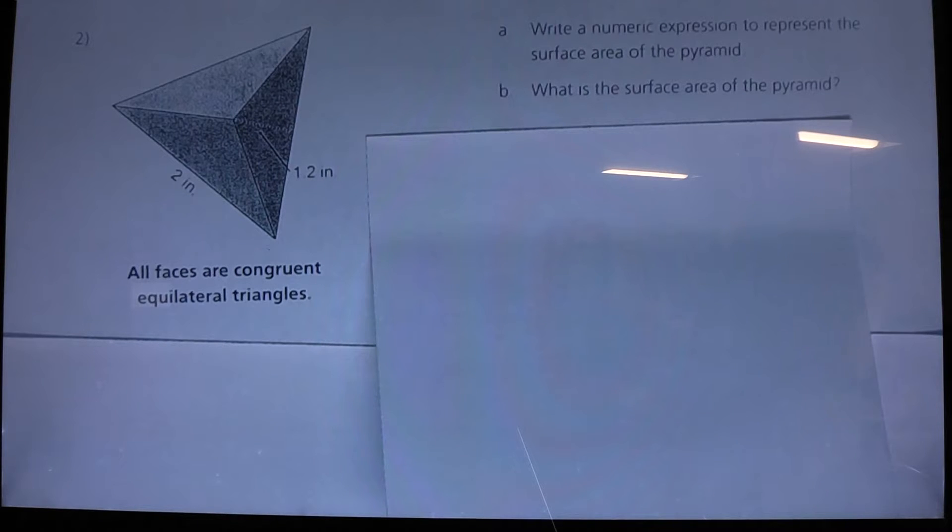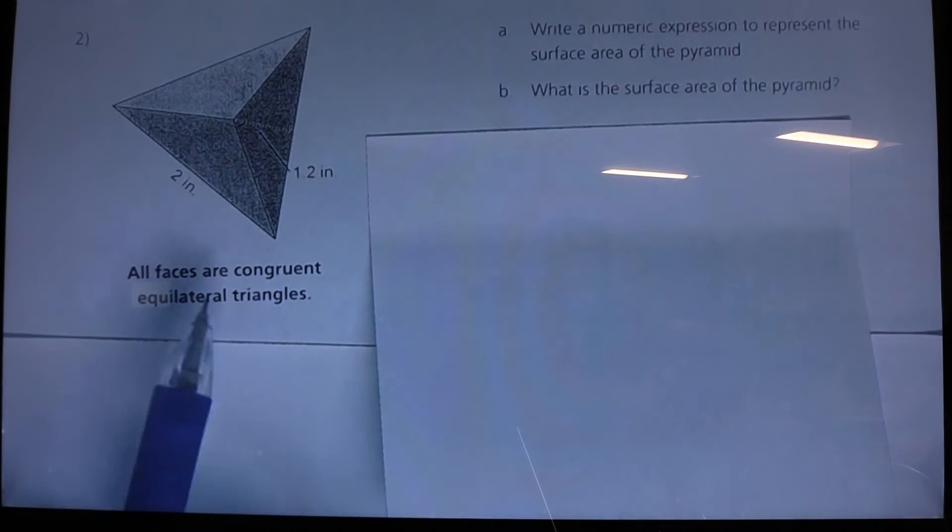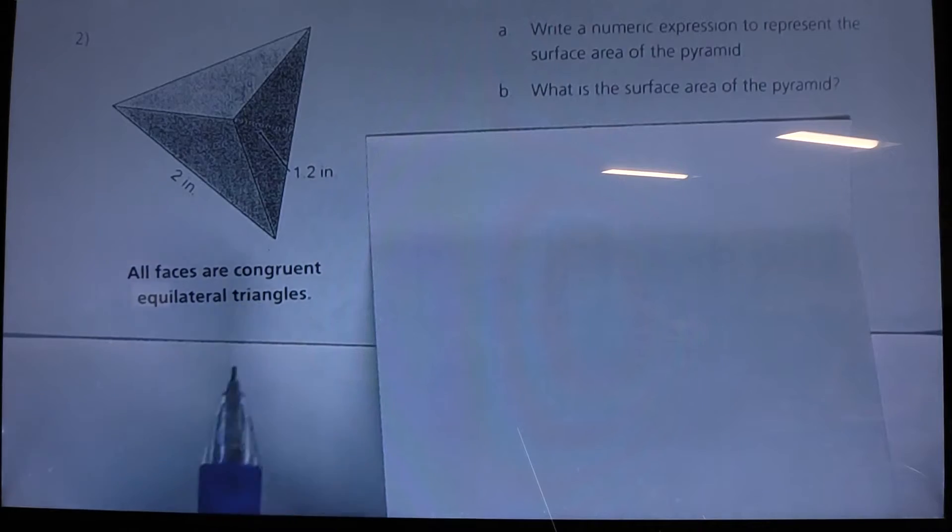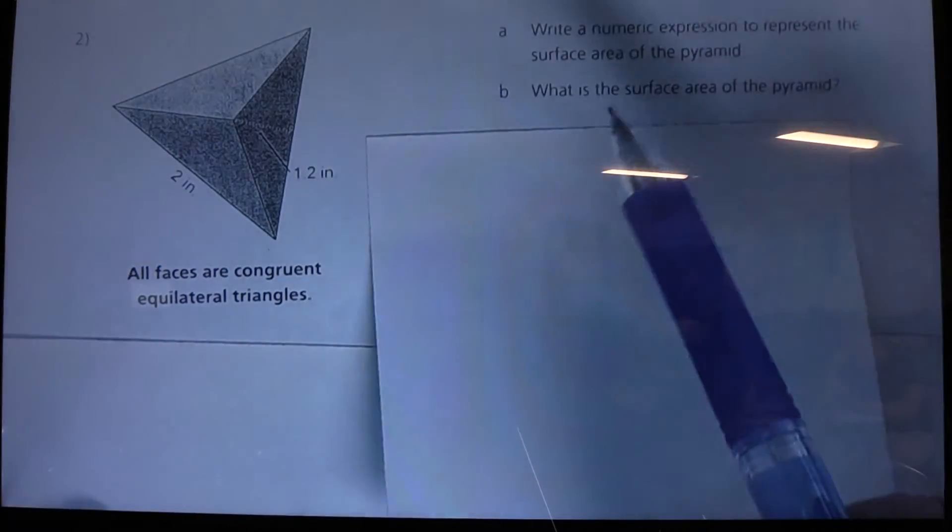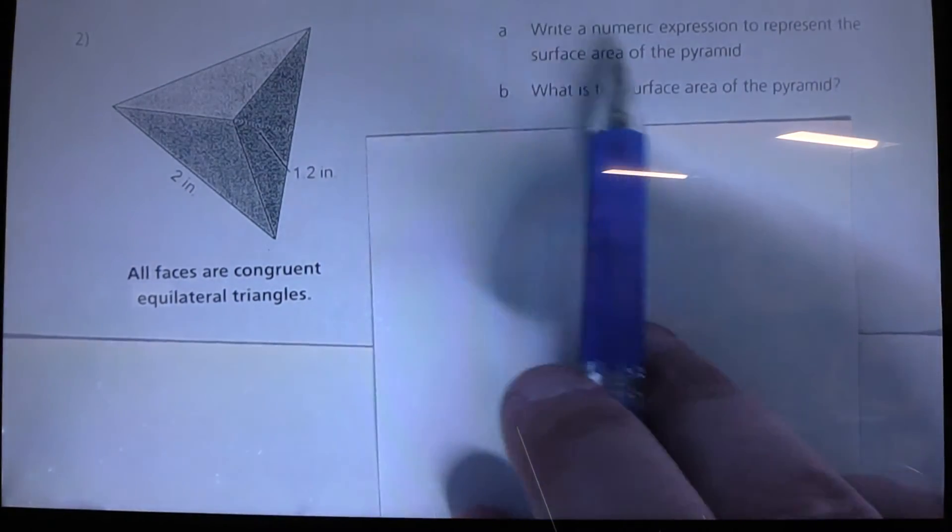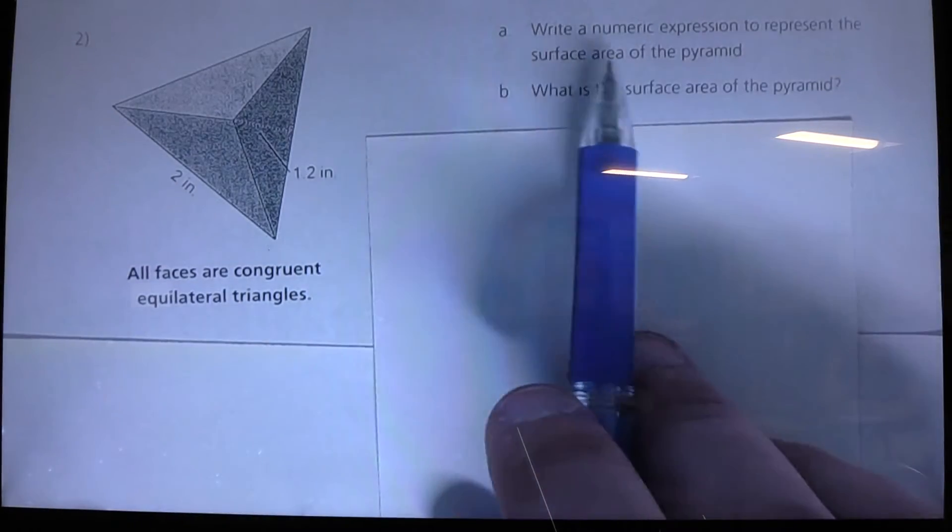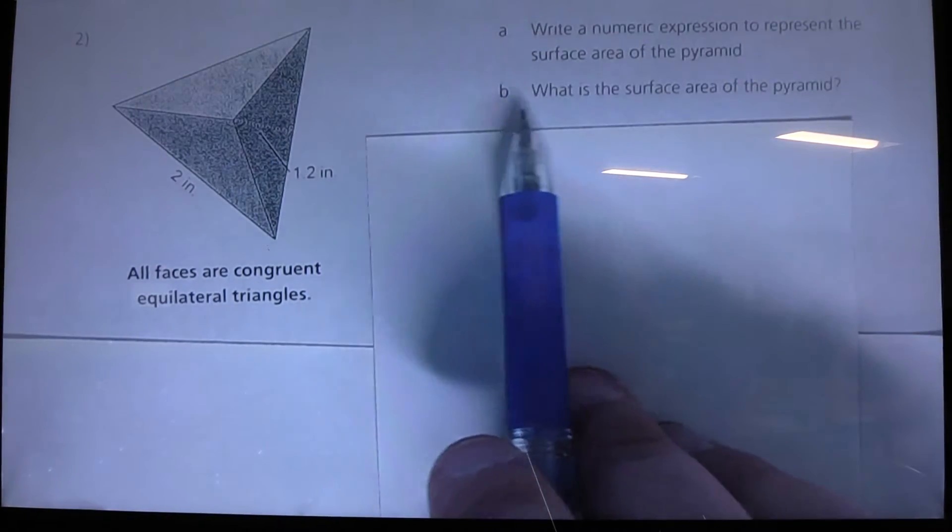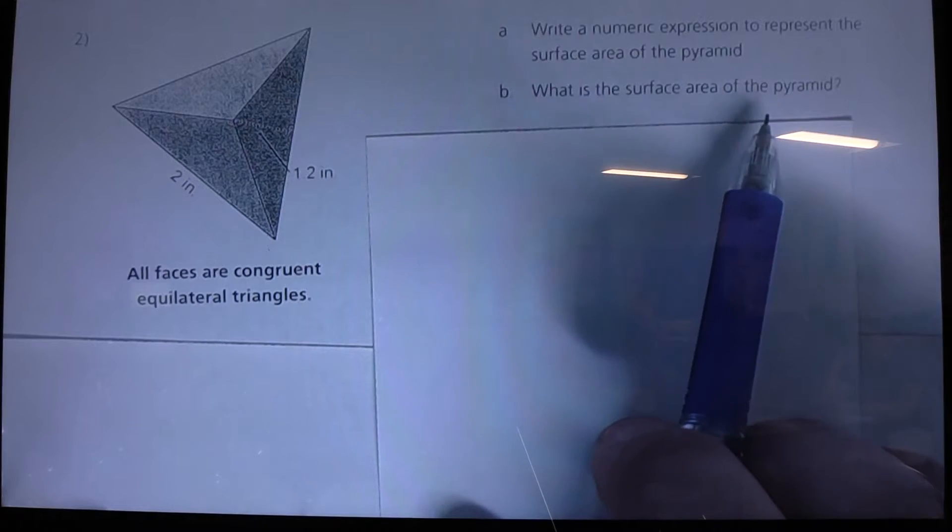So let's look at it. Here we have a situation where we have a pyramid and this pyramid tells us all the faces are congruent equilateral triangles. Part A, write a numeric expression to represent the surface area of the pyramid. Part B, what is the surface area of the pyramid?